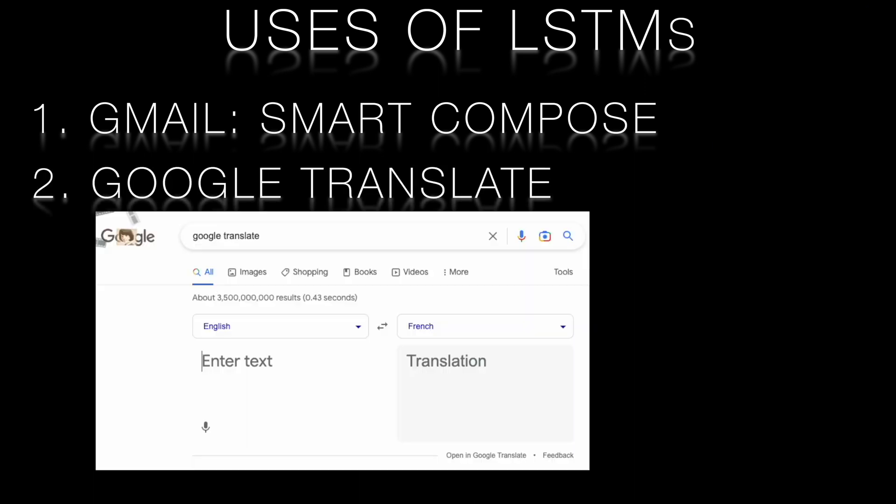Machine translation. Google Translate adopted LSTMs as far back as 2016 to improve translation quality. The LSTMs enabled the system to better handle long sequences and complex grammatical structures.